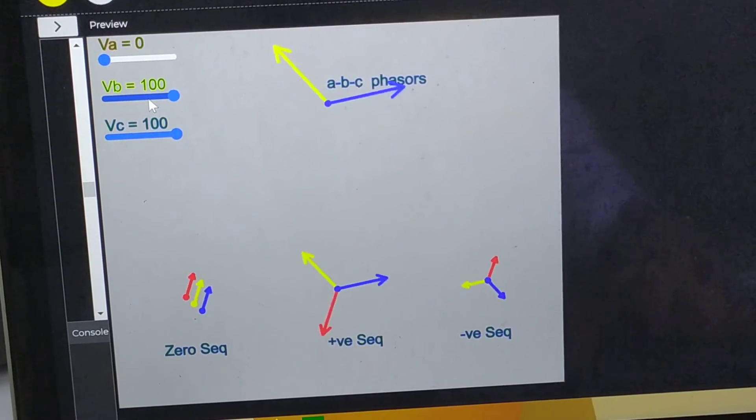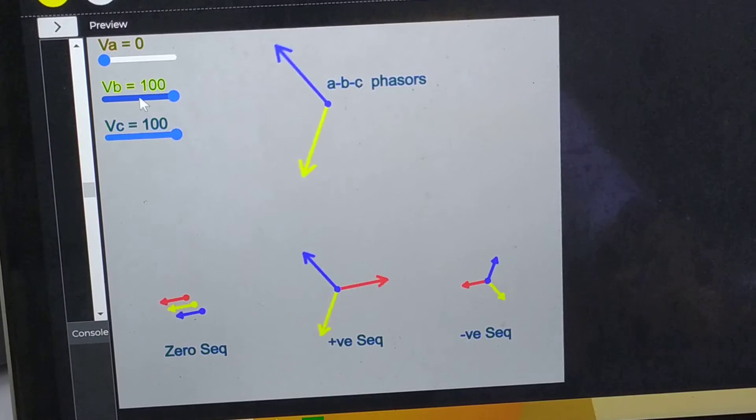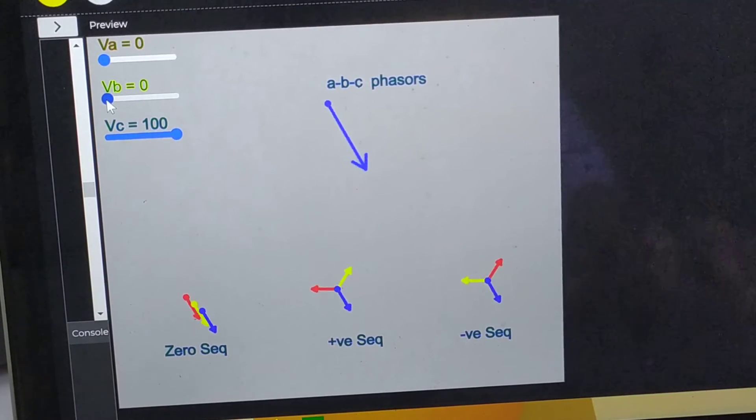Now let me distort B phase. B phase is 50. B phase is 30. Now B phase is zero. So now there is only C phase.